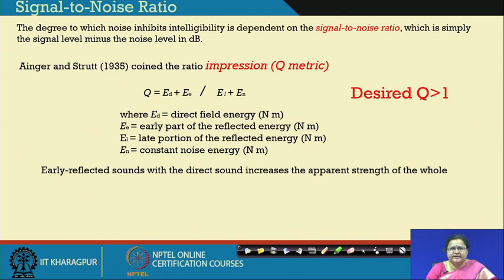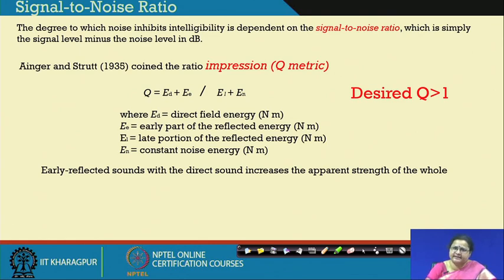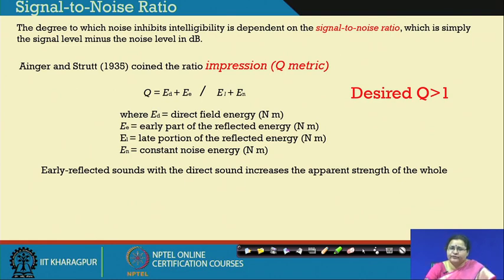We also need to consider the noise inside the environment. As discussed in the earlier lecture, fans moving inside the space or air conditioning mechanical sound coming into the space are all negative to what sound we are producing. We do not want that sound to reach a person's ears, but it is reaching. We cannot have a fully proof room with no sound from fans, no mechanical duct sound, and no sound coming from the roadside.